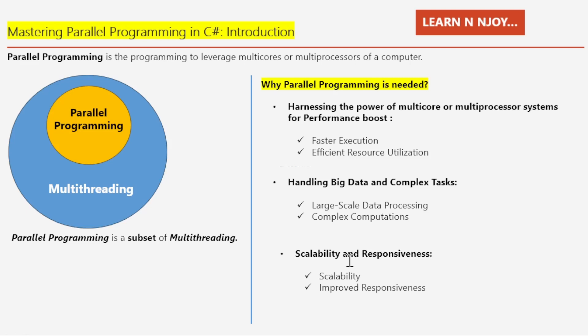Number three: Scalability and Responsiveness. As your workload grows, Parallel Programming scales with it, effortlessly handling increased demands. Improved responsiveness — users want responsiveness. Parallel Programming ensures your application stays snappy and responsive, even under heavy loads. That's why Parallel Programming is needed.